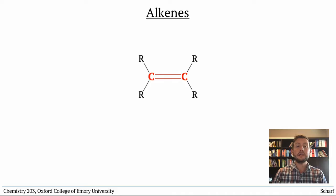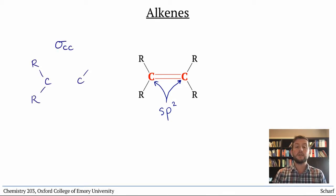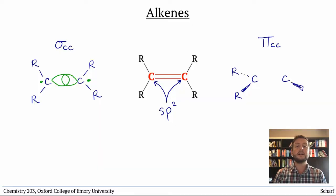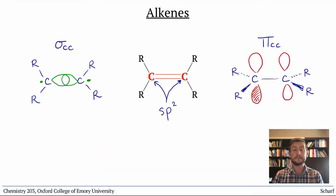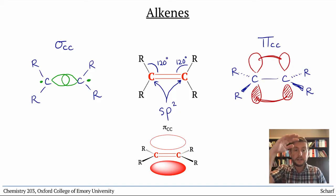Alkenes contain C-C double bonds between sp2 hybridized carbon atoms. The double bond consists of a sigma bond formed from the direct overlap of an sp2 hybrid orbital from each carbon, and a pi bond formed from the side-to-side overlap of their unhybridized p orbitals. Since both carbon atoms are trigonal planar with 120 degree bond angles, the entire functional group is essentially planar, with the pi bonding electrons hovering above and below that plane.